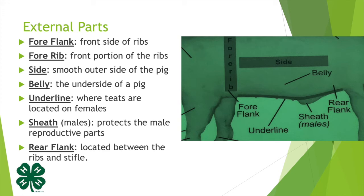The underline is where the teats are located on females. The sheath is only found in males and it protects the male reproductive parts. The rear flank is located between the ribs and the stifle.